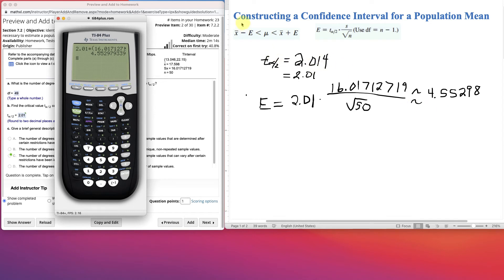Alright, so now once we have my E, which wasn't too bad to figure out, just getting the critical value for the t is kind of the toughest thing. Now we just take the sample mean, which was given to be 17.598, and we subtract the error, which is 4.55298. That would be the lower bound for mu. The upper bound would be where we add 17.598 plus 4.55298.